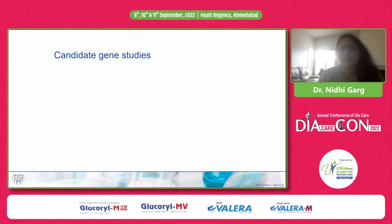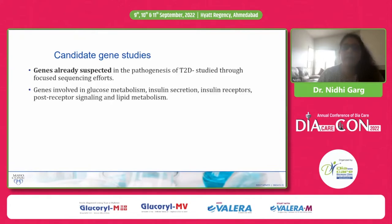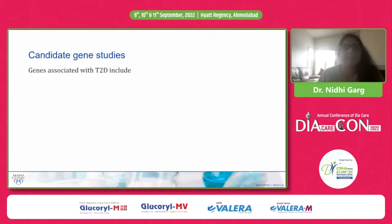In candidate gene studies, potential genes and pathways that are already known are studied in more depth and detail. Genes already suspected in the pathogenesis of type 2 diabetes are studied through focused sequencing efforts. Genes involved in glucose metabolism, insulin secretion, insulin receptors, post-receptor signaling, and lipid metabolism are studied — because we know these are the pathways involved in the pathogenesis of type 2 diabetes.